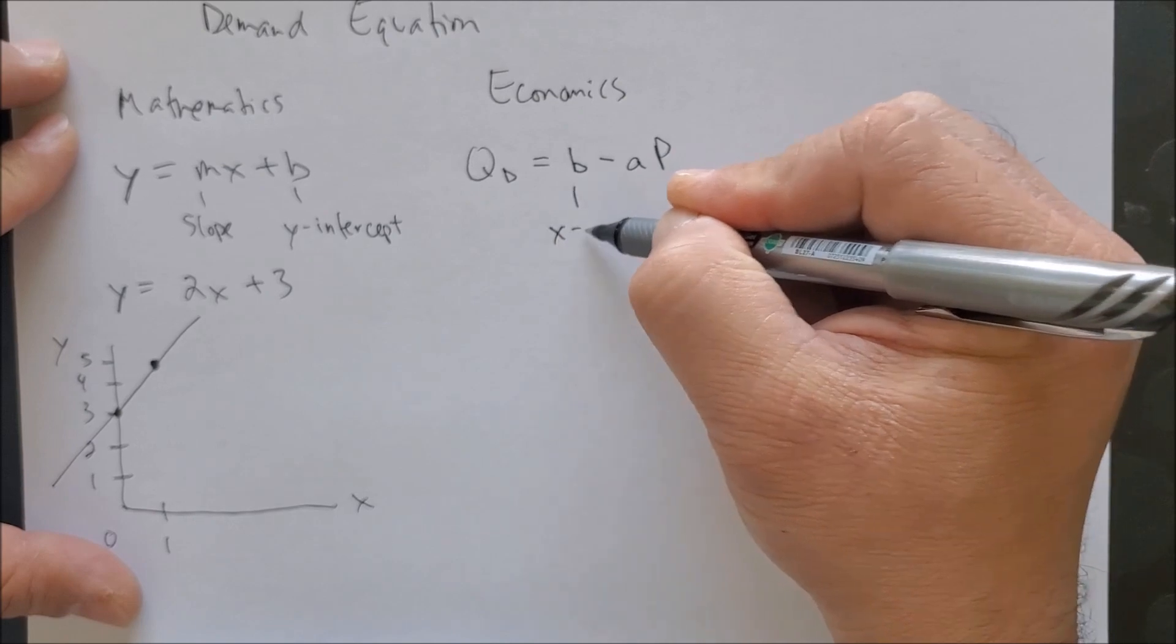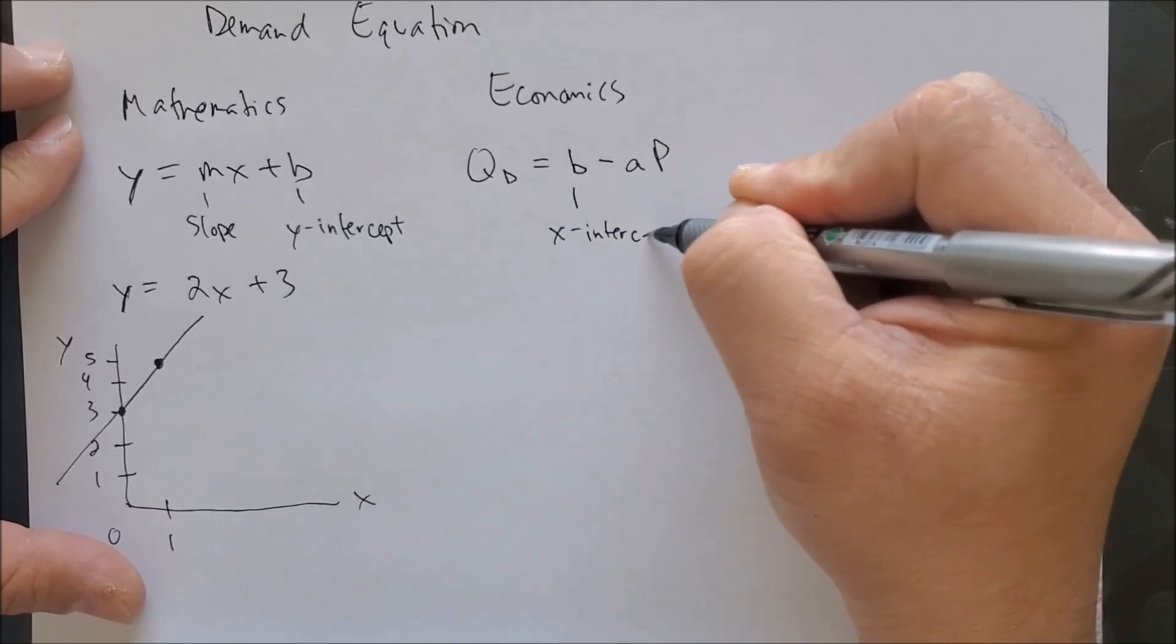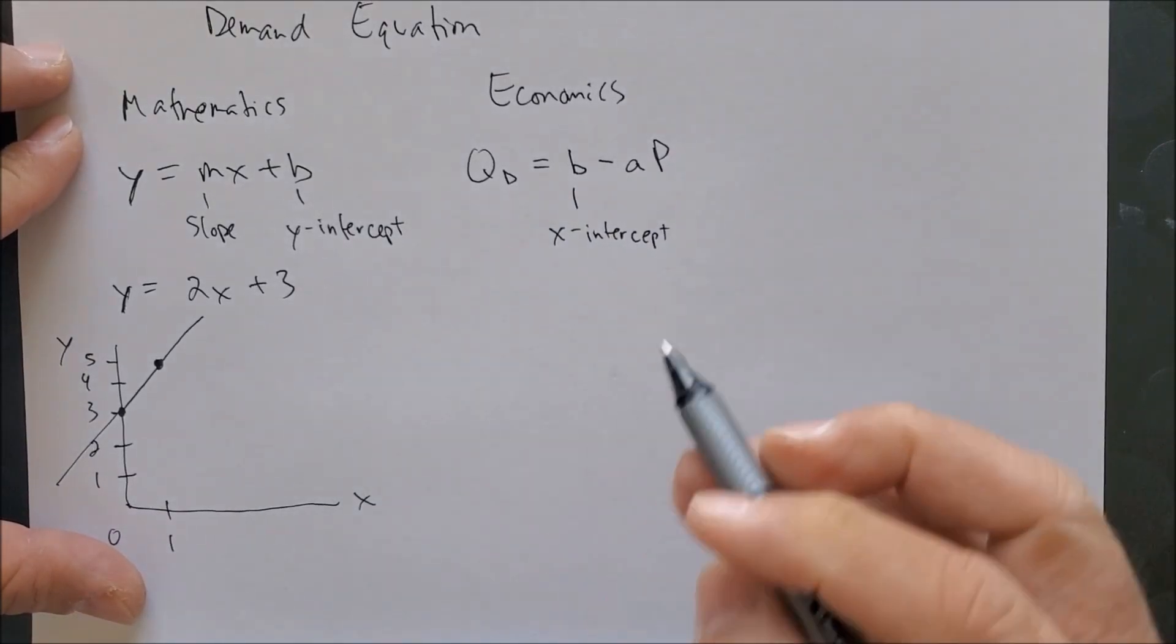Now I want you to see that we have different letters that we are using. We have b, which represents the x-intercept.